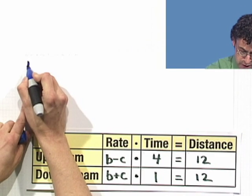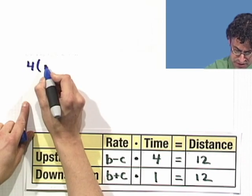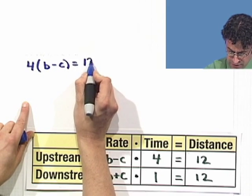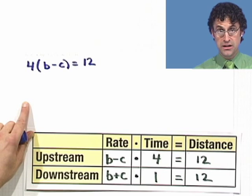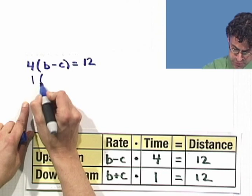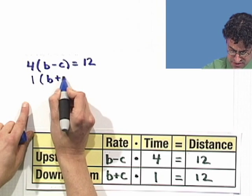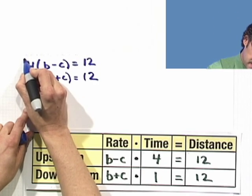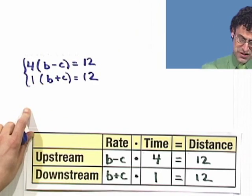The first one is going to be four multiplied by the quantity b minus c equals 12. That's the upstream equation. And then the downstream equation is going to be very similar. It's going to be just one multiplied by b plus c equals 12.